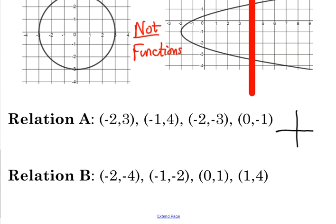Negative 2, positive 3 would be about right here, negative 1, positive 4, negative 2, negative 3, and 0, negative 1.